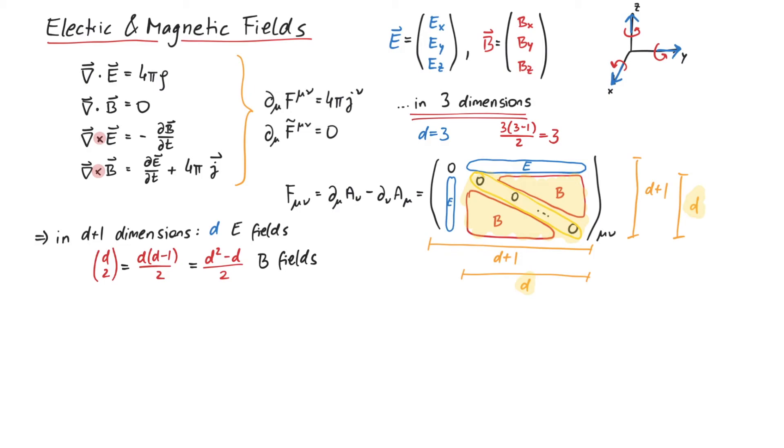Now, what about other dimensions? Take a look at this table, where we wrote down the number of E and B fields in several dimensions. The number of B fields seemed to follow a strange pattern.